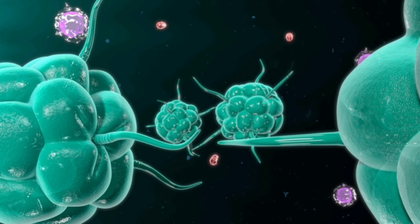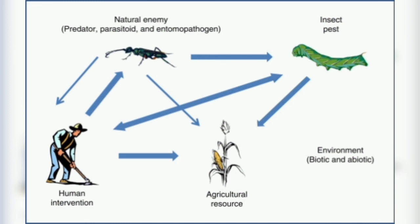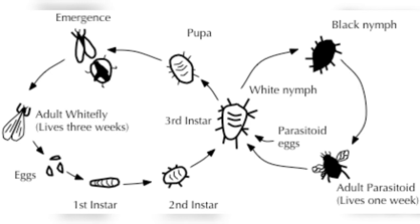Under certain environmental conditions, diseases can multiply and spread naturally through an insect population, particularly when the density of the insect is high. So today's video is about biological control — how predators, parasitoids, and pathogens help control insect pests and the damage they cause.